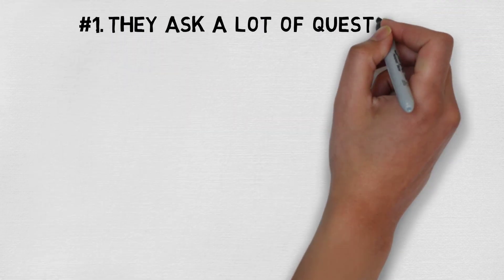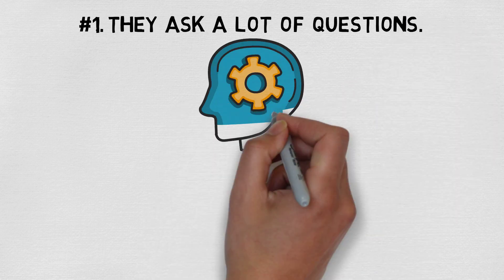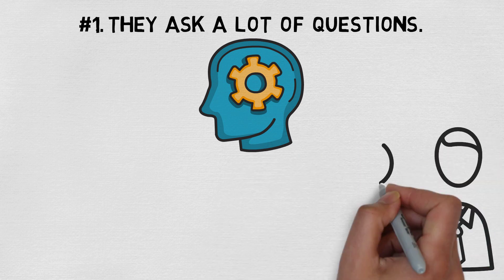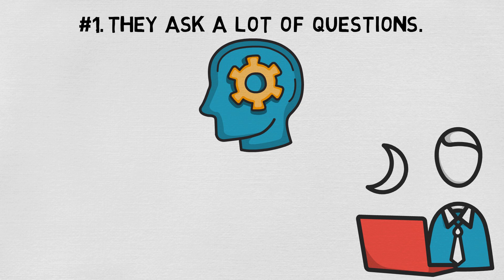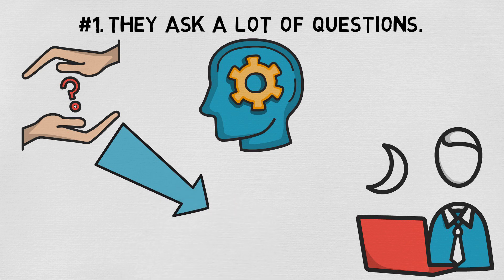Number one, they ask a lot of questions. Some people might mistakenly think that intelligent people already know all the answers. While they may know some answers, intelligent people are always striving to expand upon what they already know. They may ask a million clarification questions that will help them solve not only a current problem but future ones as well.